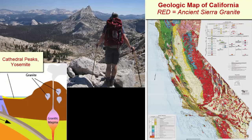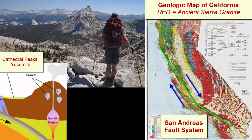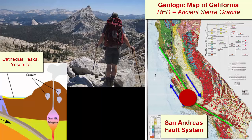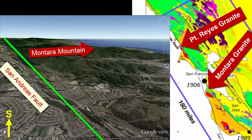Leaving this unique volcanic region, we return to the remnants of the ancient subduction zone volcanoes, now exposed as granite in the central and western Sierras. The San Andreas Fault has done a great job of moving rocks around in the state. As a result of the transform motion, sections of the southern Sierra Nevada granite were separated from their origination spot and carried northwards. We see them today as far north as Point Reyes — they also make up the rock of Montara Mountain and the rock of the Farallon Islands.